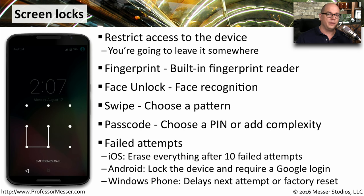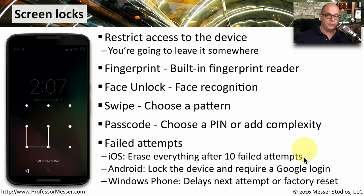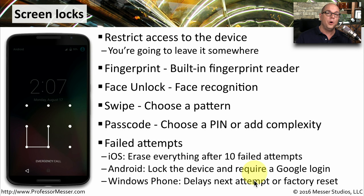With all of these different unlocking techniques, you have the option to enable additional protection for failed attempts. On iOS, you can have the device erase everything on the phone after 10 failed attempts. On Android, it will lock the device and require your Google login to regain access. And Windows Phone will simply delay the next attempt or require a factory reset to get back into your mobile device.